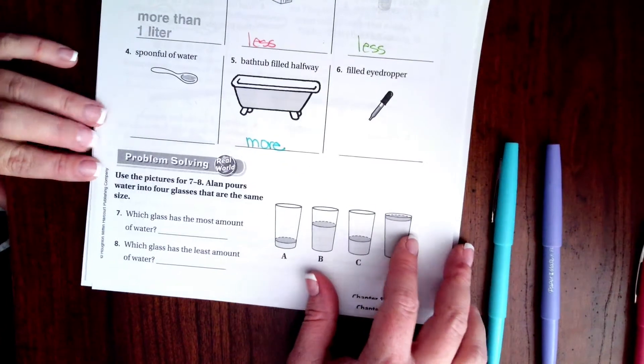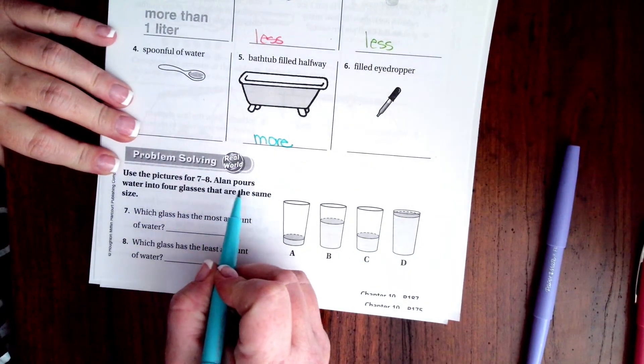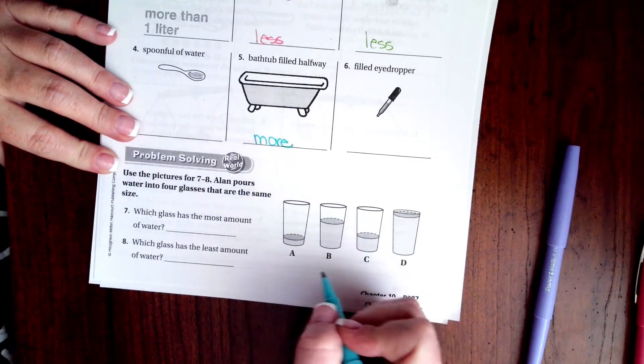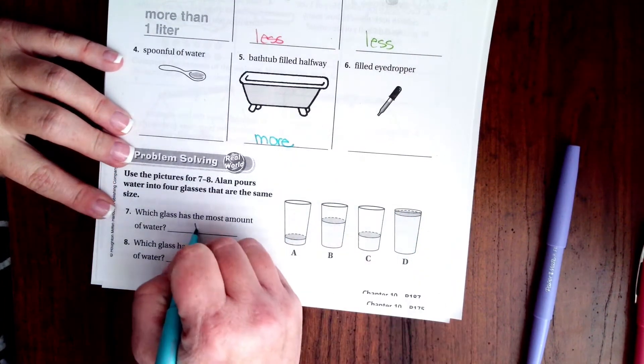We're going to go down and do number seven and eight. It says to use the pictures for seven and eight. Alan pours water into four glasses that are the same size. So the glasses are the same size. Which glass has the most amount of water?